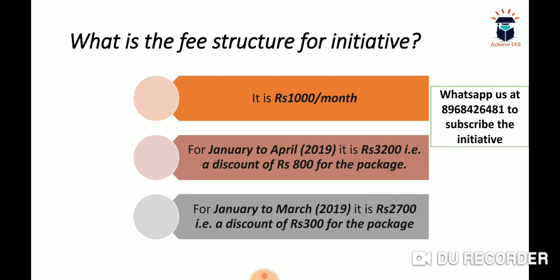For the mains answer writing initiative, the fee is rupees 1000 per month. If you subscribe for four months from January to April as a package, you get a discount of rupees 800 and pay only rupees 3200. For a three-month subscription, a discount of rupees 300 is available and you pay rupees 2700.